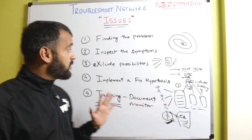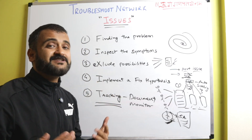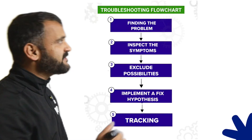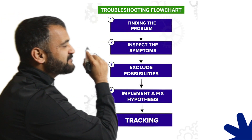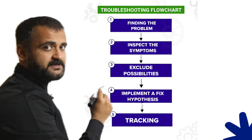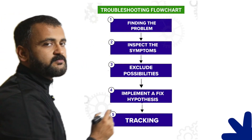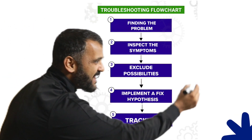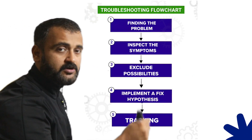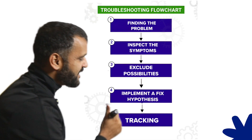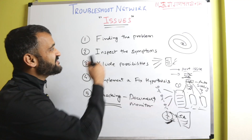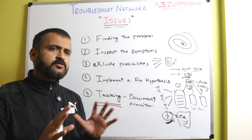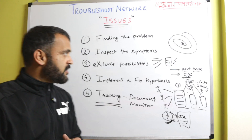So this is the fix it framework. I use this acronym because it is easy to recall — Find the problem, Inspect the symptoms, Exclude the possibilities, Implement a fix hypothesis, and iterate until you find a 100% sure-shot fix, and then Track it. This fix it framework can be applied in troubleshooting different kinds of issues.